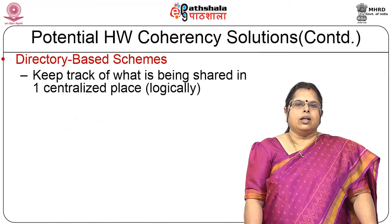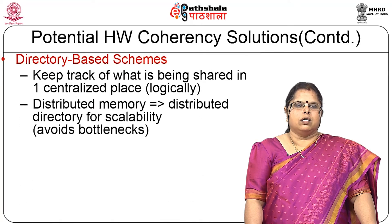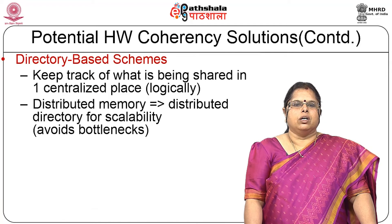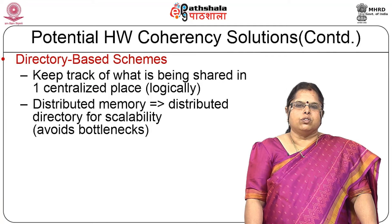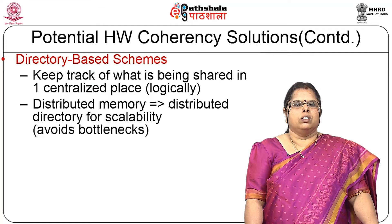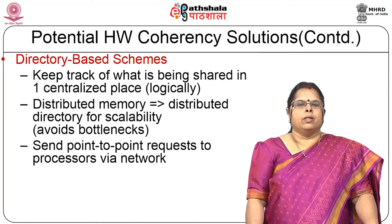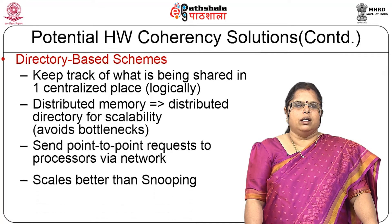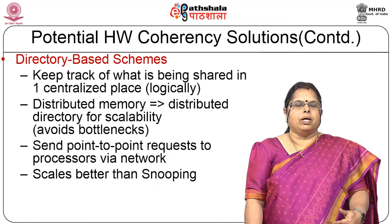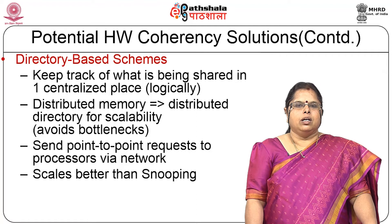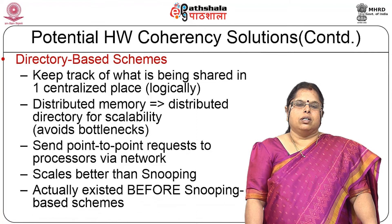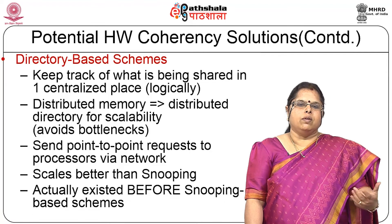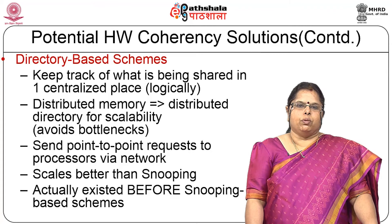Directory-based schemes keep track of what is being shared in one centralized place — at least logically. With distributed memory, you can distribute the directory for scalability and send point-to-point requests to processors via the network. This method scales better than snoop-based approaches and actually existed even before snoop-based schemes.